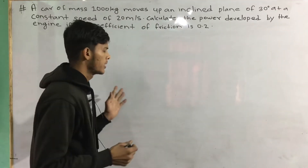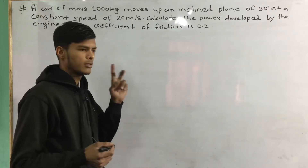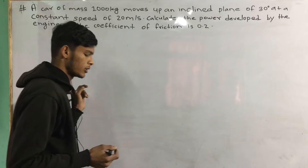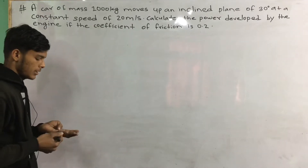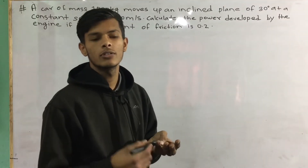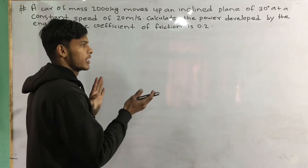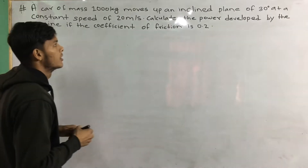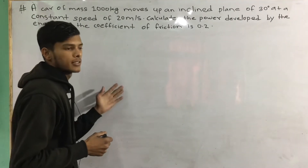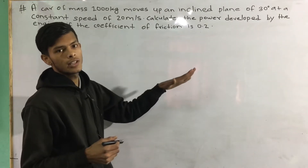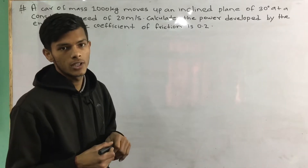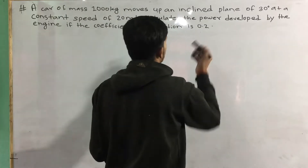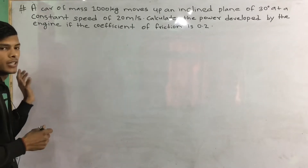This is a numerical. In this case, there is a formula. We have a 1000 kg mass, a 30 degree inclined plane, and we have to find the power produced. We have the coefficient of friction as 0.2.